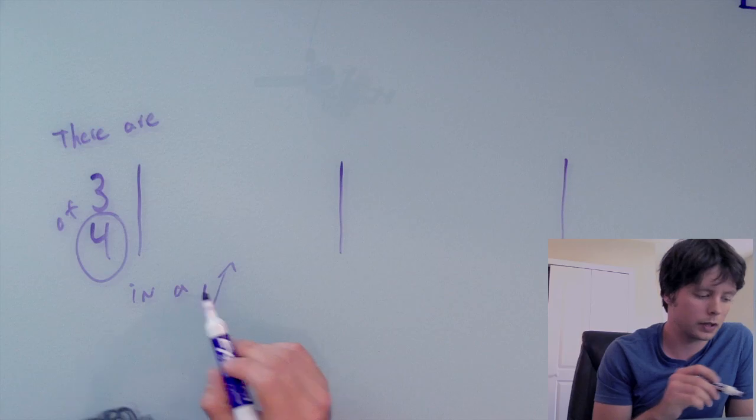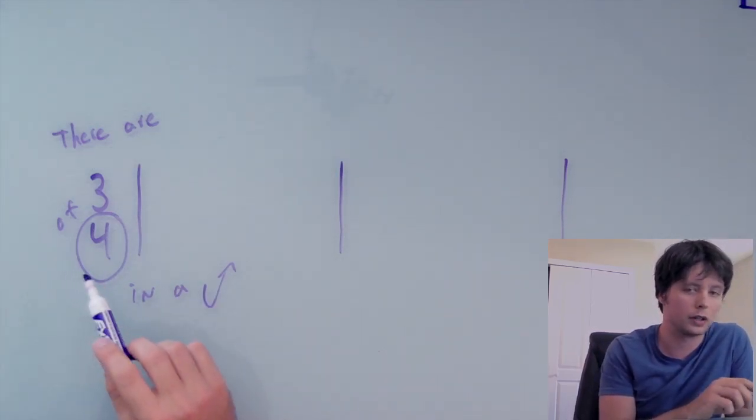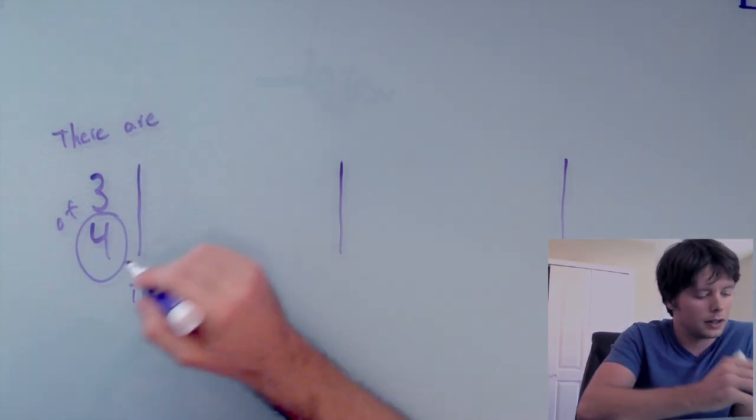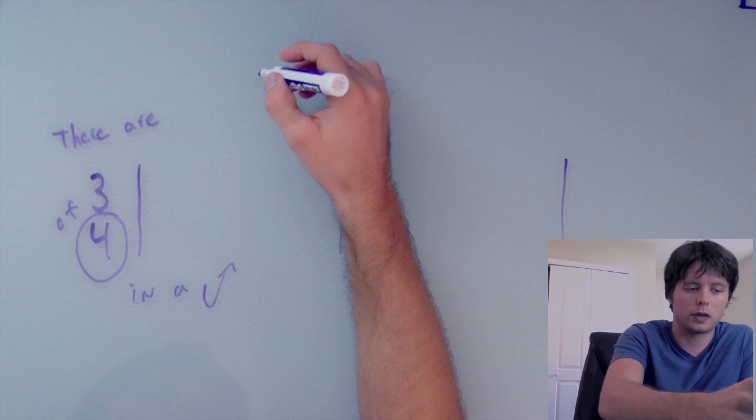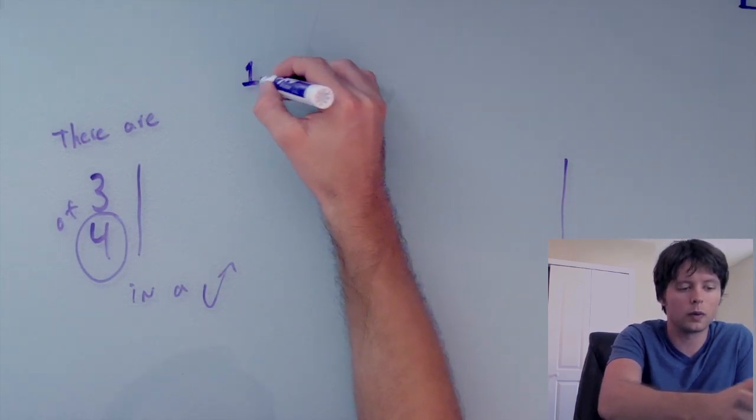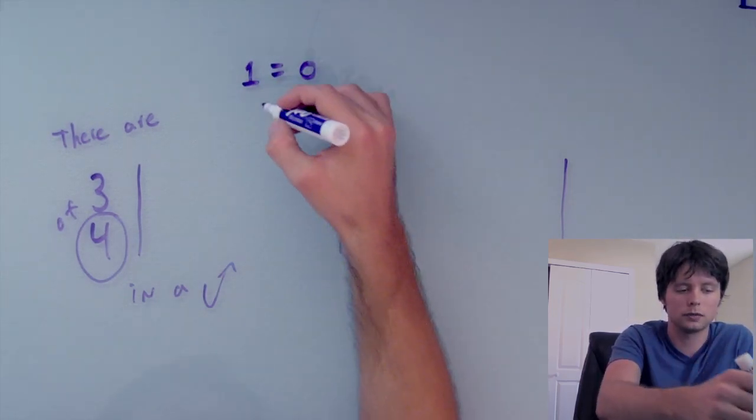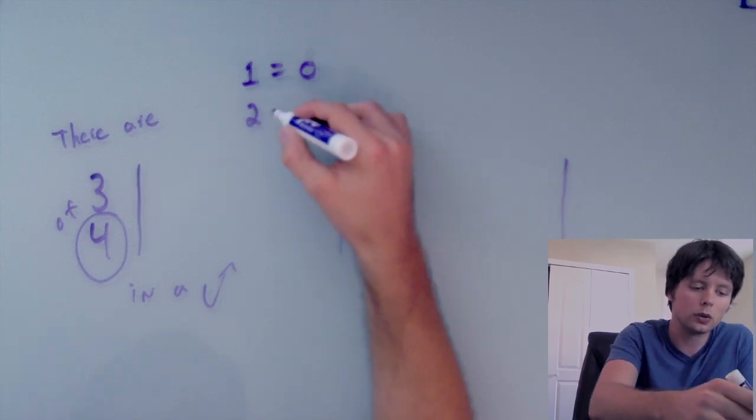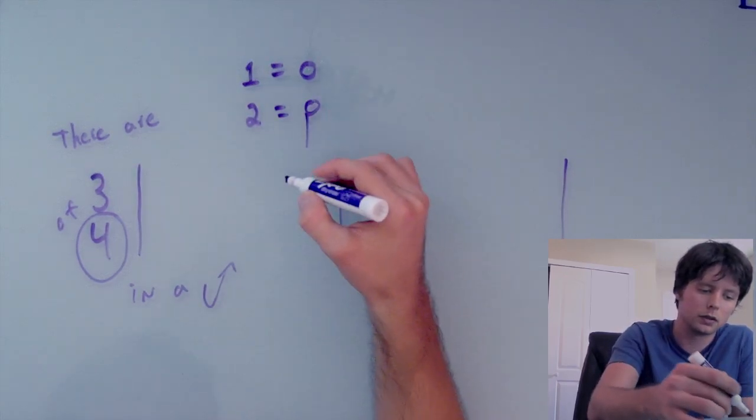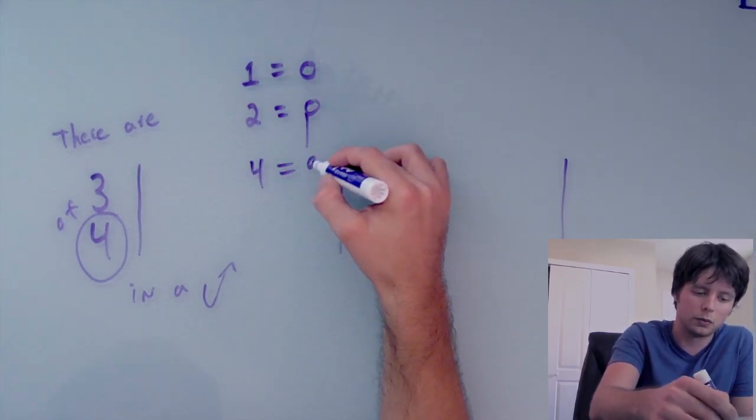So you would read this as there are three of these in a measure. So obvious question is what does this 4 mean? Three of what? So that bottom number there, it actually just represents a note. Okay so if it were a 1 would represent a whole note. If it were a 2 would represent a half note. A 4 would be a quarter note.